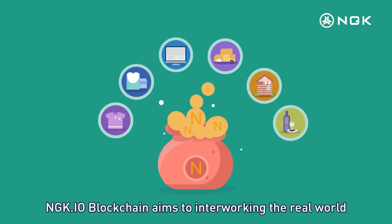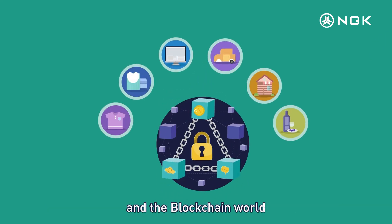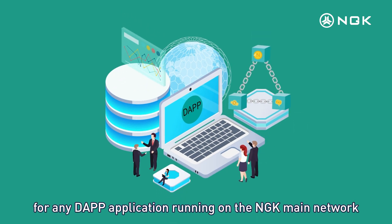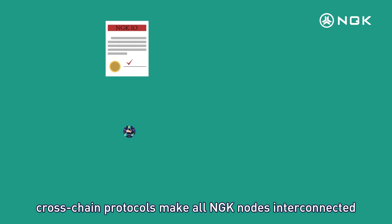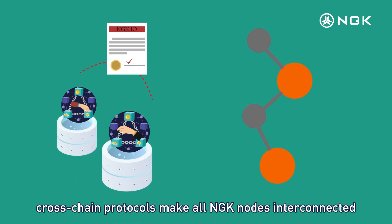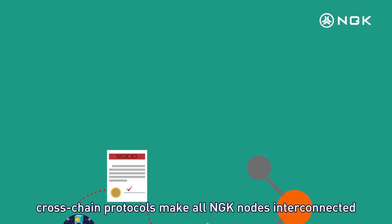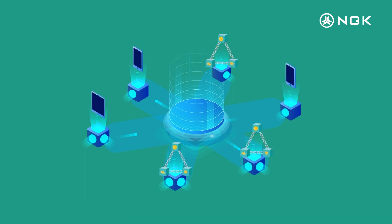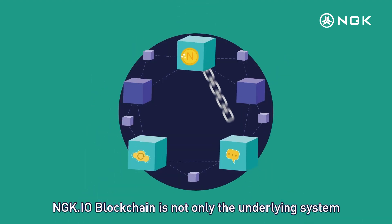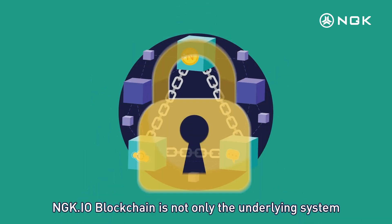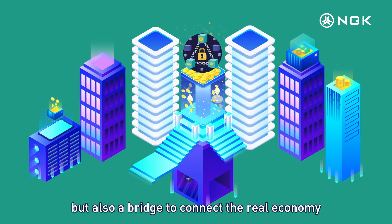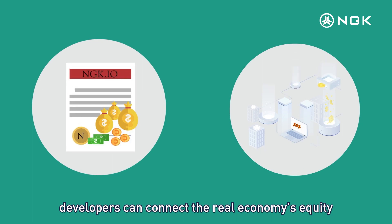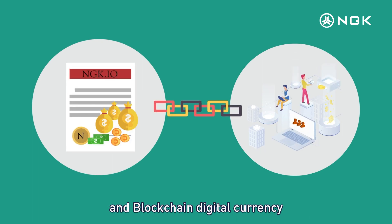NGK.IO blockchain can accommodate more decentralized applications and provide a secure, fast, and smooth underlying framework. It aims to interwork the real world and the blockchain world. Cross-chain protocols make all NGK nodes interconnected, forming a decentralized network that interacts across chains.